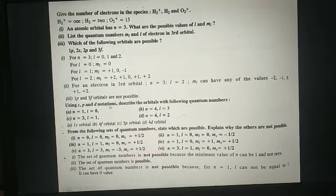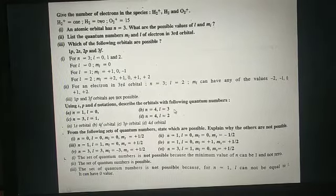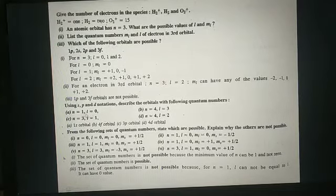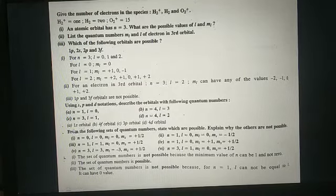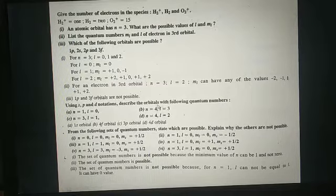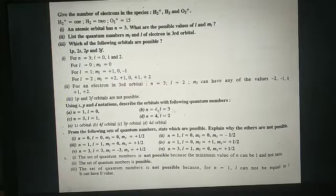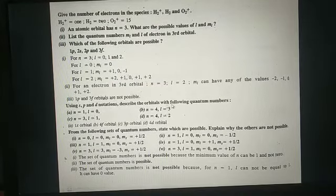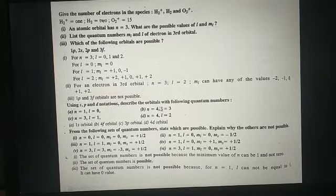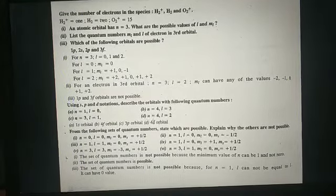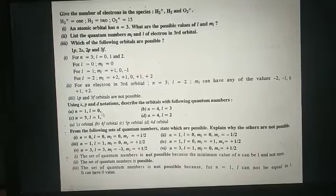Using sp and d notations, describe the orbitals with the following quantum numbers. For n equal to 1 and l equal to 0, this is the 1s orbital. For n equal to 4 and l equal to 3, since 3 represents the f orbital and n equal to 4, this is the 4f orbital.